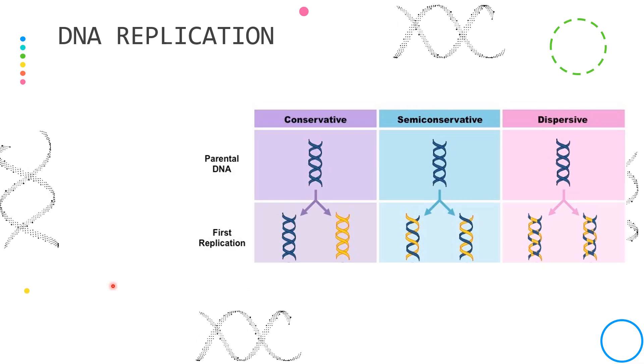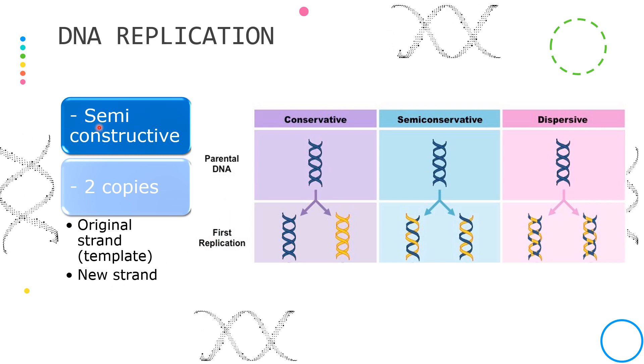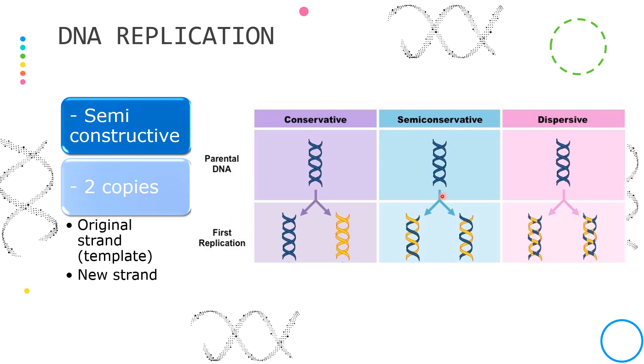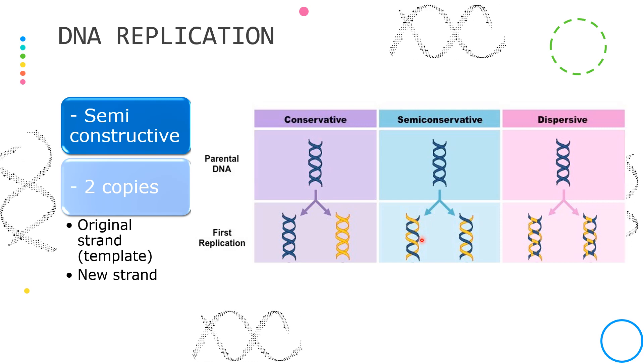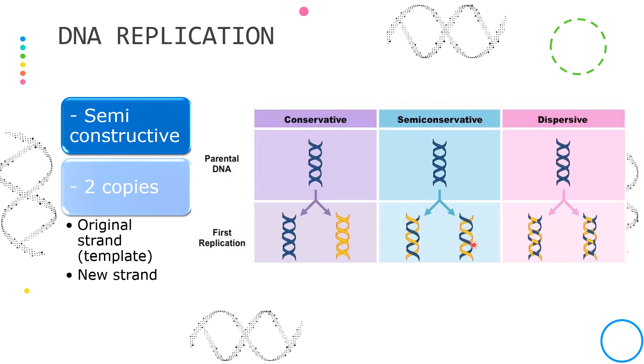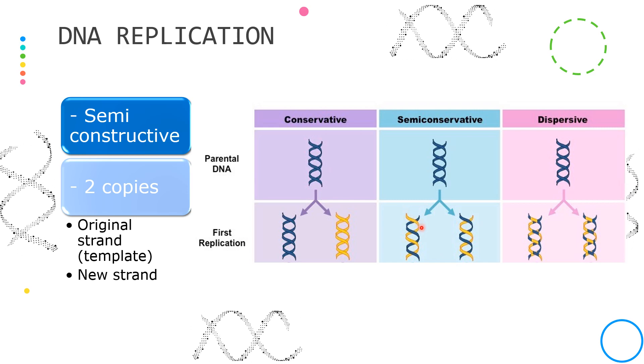Replication of DNA is described as semi-conservative. This means that two copies each would have the original copy or the template copy and a new strand.